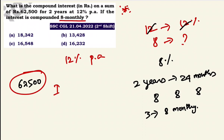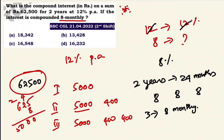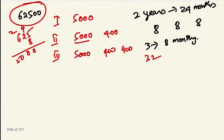First period: 62,500 × 8% = 5,000. Second period: 5,000 interest added, so 8% of 67,500 = 5,400. Third period: 8% of 72,900 is 5,832. Adding all three periods: 5,000 + 5,400 + 432 — totaling compound interest.